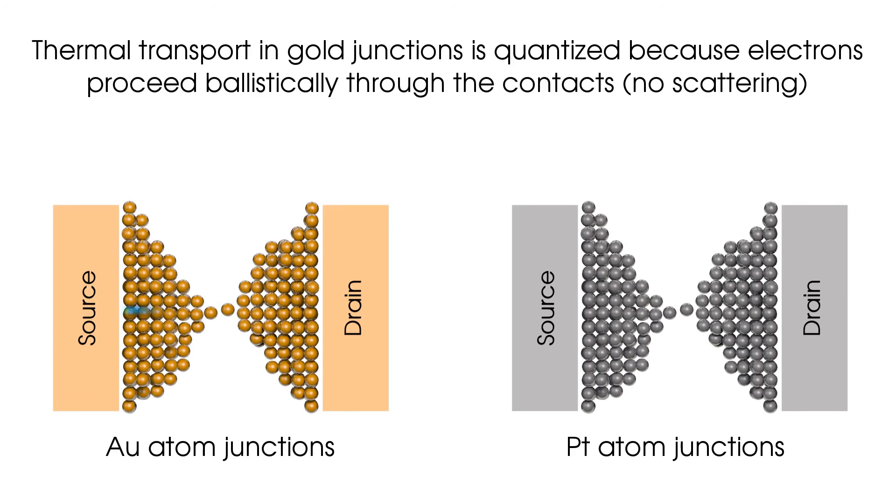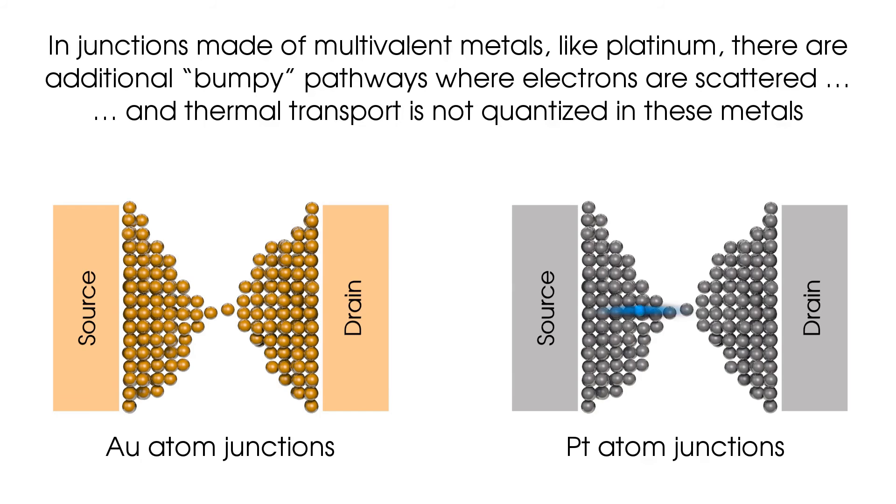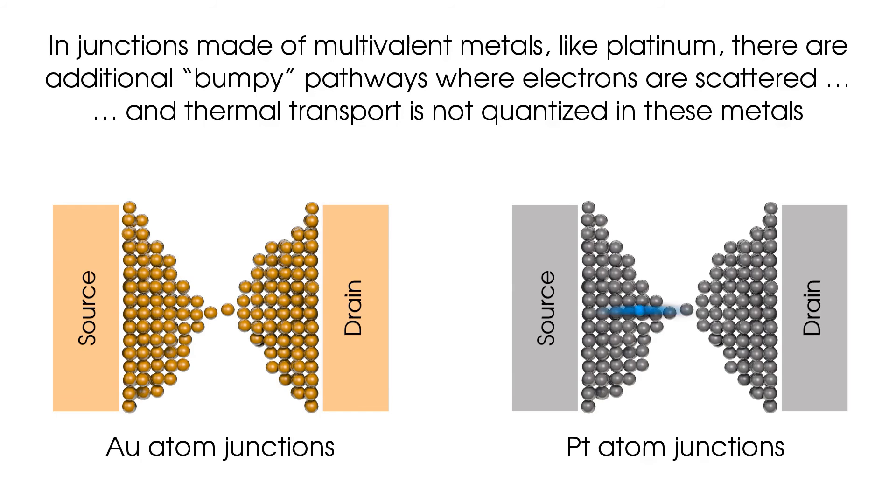But in junctions made of multivalent metals, like platinum, there are additional bumpy pathways where electrons are scattered. Therefore, thermal transport is not quantized in these metals.